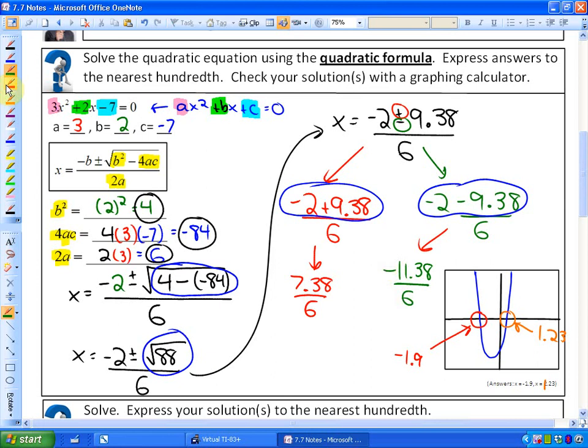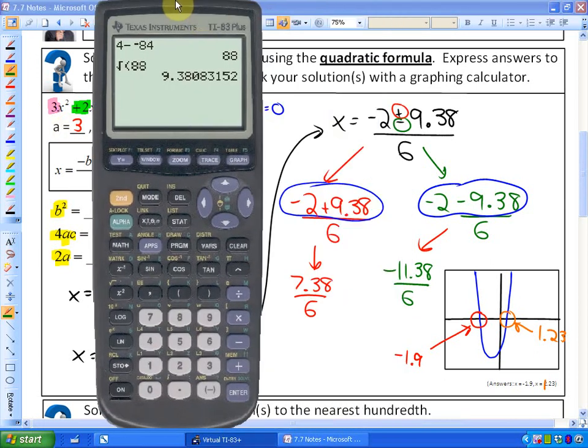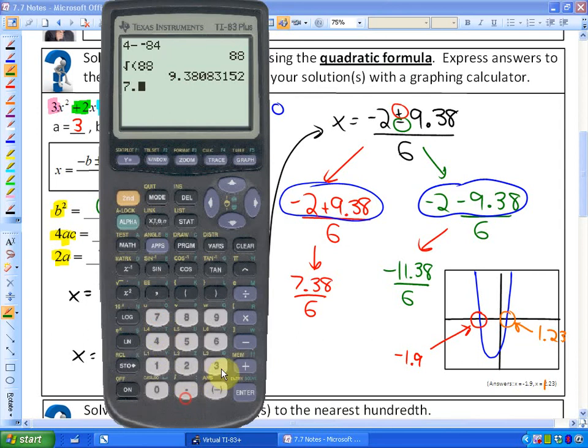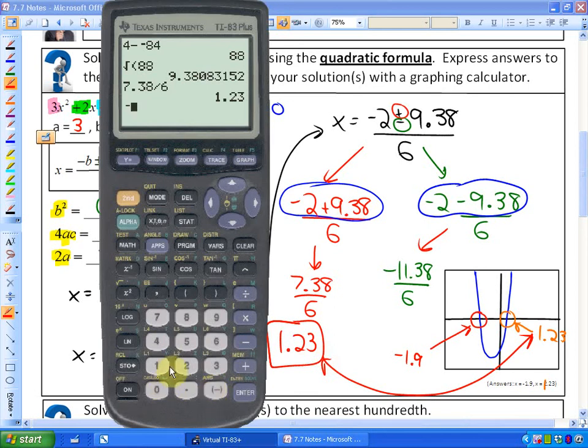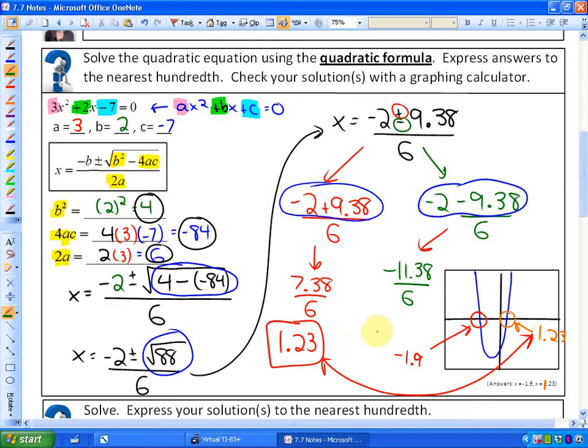Finally, if you divide those, let me divide the red fraction. If I divide 7.38 divided by 6, I get 1.23, which is one of our solutions, as you can see. It's the same as that solution. If I do negative 11.38 divided by 6, I get negative 1.9, which is also my other solution, the same as this one here. In the next lesson, we'll look at some more quadratic formula cases.